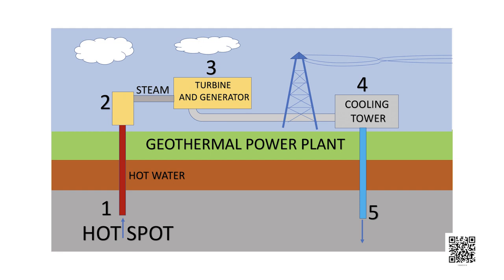Sometimes hot water from the region finds outlets at the surface, and such outlets are called hot springs. The steam which is trapped in rocks is routed through a pipe to a turbine and is used to generate electricity. The cost of production would not be much, but there are very few commercially viable sites where such energy can be exploited. There are a number of power plants based on geothermal energy operational in New Zealand and the United States of America.